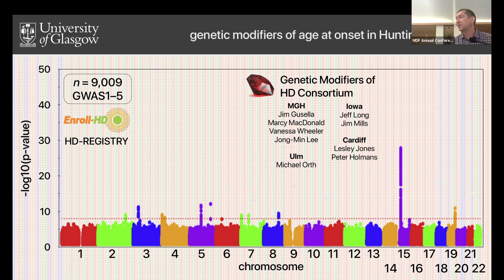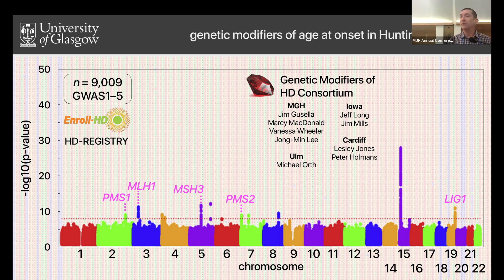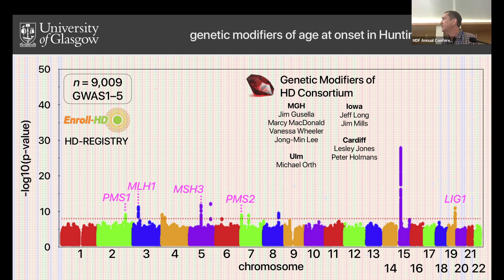The expectation when this work was done was that we would find modifiers of HD — variants in genes associated with neuronal health, or genes associated with processing of protein aggregates or mitochondrial function. What actually came up? All of the genes shown in pink are genes from the DNA mismatch repair pathway. These are genes known from prior studies to be involved in the process of genetic instability, particularly from mouse models, in the process of somatic expansion of CAG and CTG repeats seen in DM1 and other animal models.